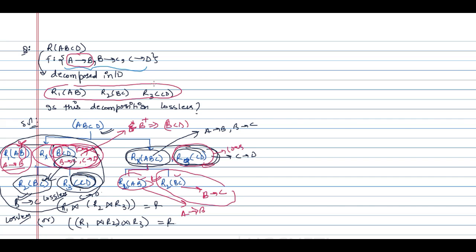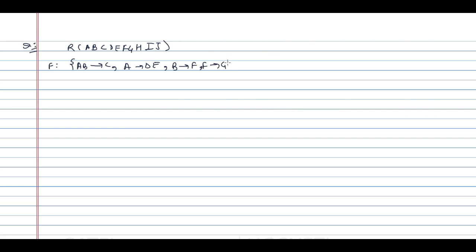If we break the original table into these three relations R1(A, B), R2(B, C), and R3(C, D), the decomposition is lossless. Now let us take the next example. Here they are saying we have the relation R(A, B, C, D, E, F, G, H, I, J) and the functional dependencies are: AB determines C, A determines DE, B determines F, F determines GH, and D determines IJ, G determines IJ.